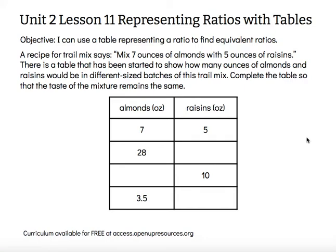A recipe for trail mix says: mix 7 ounces of almonds with 5 ounces of raisins. There's a table that has been started to show how many ounces of almonds and raisins would be in different size batches of this trail mix. Complete the table so that the taste of the mixture remains the same — not too much almonds for how many raisins there are, or vice versa.